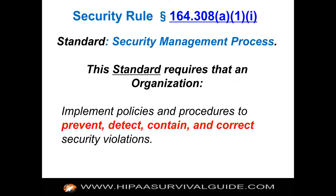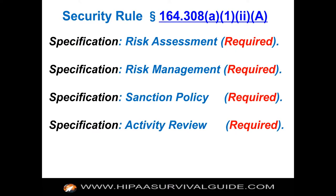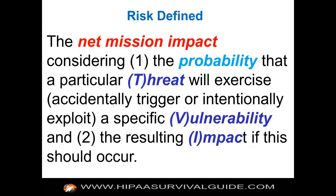This is the standard — the Security Rule, Administrative Safeguards, 164.308. If you click on this you'll be taken to the HIPAA Survival Guide where you can see the whole source. That's the standard, and then the implementation specifications come in underneath that. Here they are: Risk Assessment, Risk Management — those are the two monsters. And then it's Sanction Policy and Activity Review, which are not so monstrous, all grouped into this first standard.